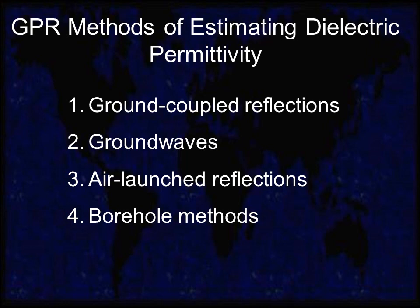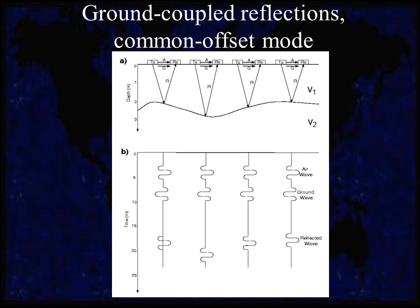The second part of this presentation will talk about different GPR methods for estimating the permittivity. I'm going to cover four different GPR techniques we can use to find permittivity: the first is ground-coupled reflections, next I'll talk about ground waves, then air-launched reflections, and finally borehole methods.